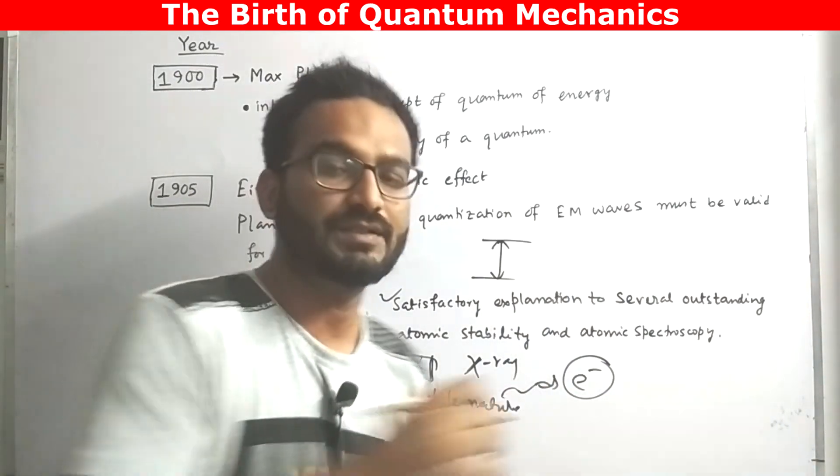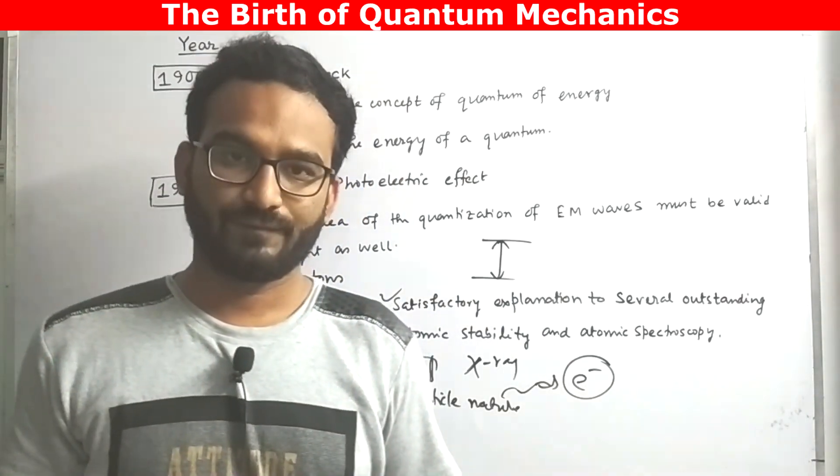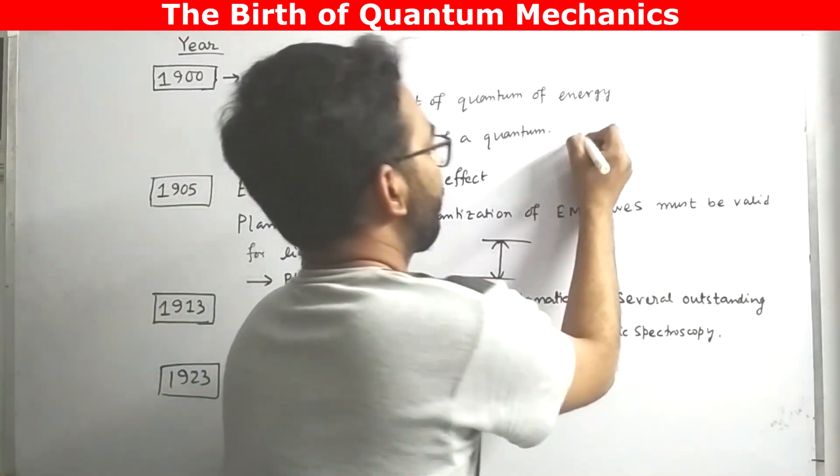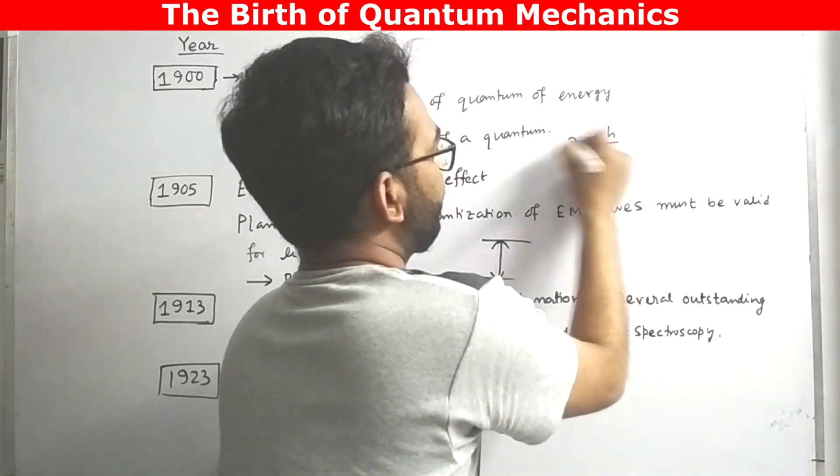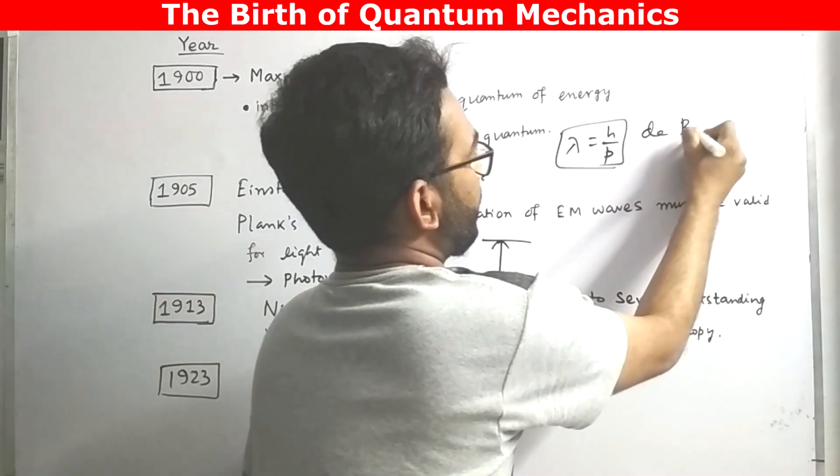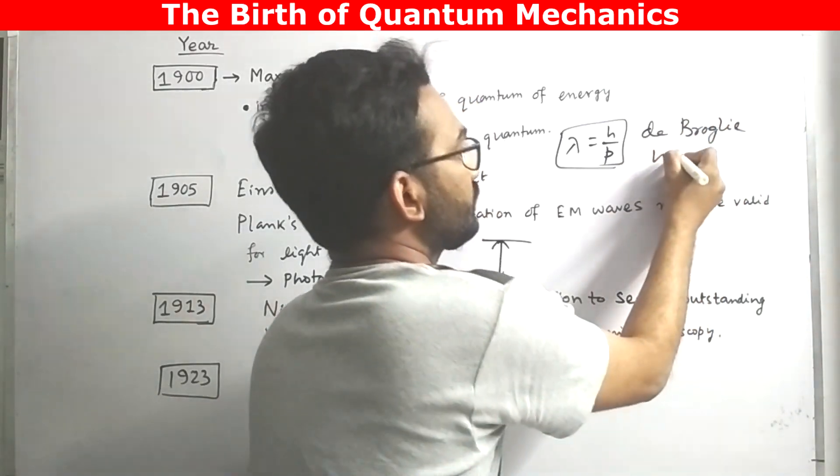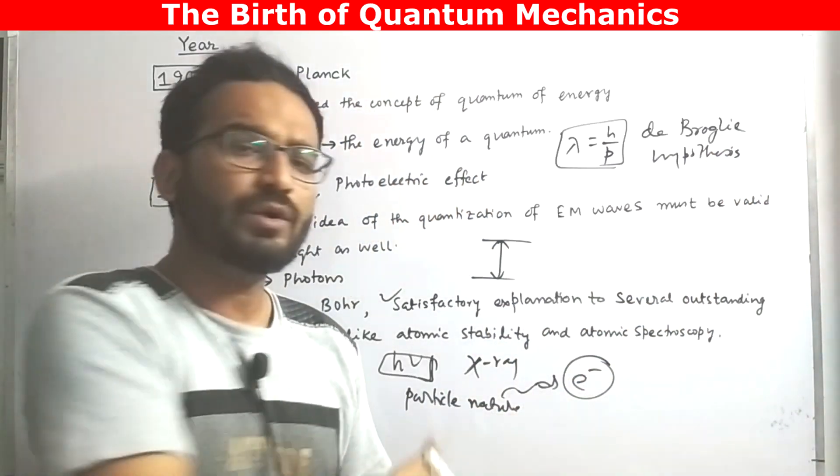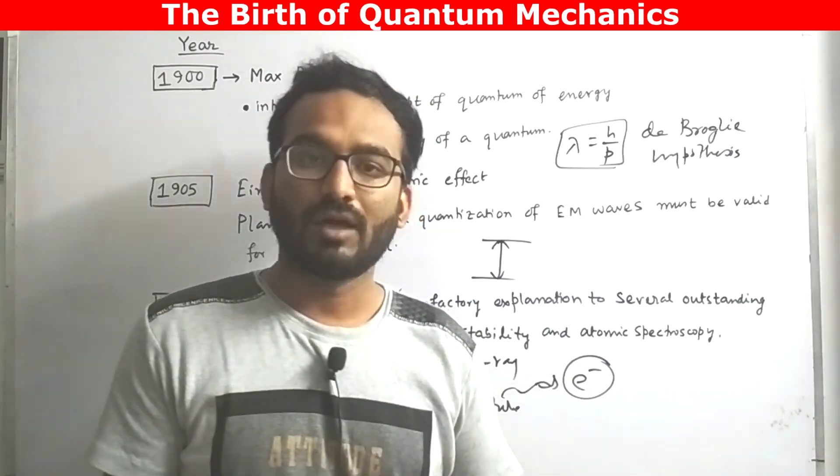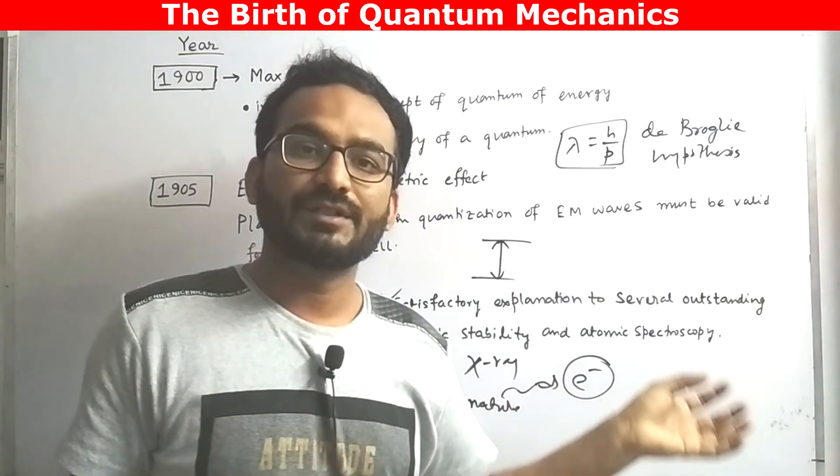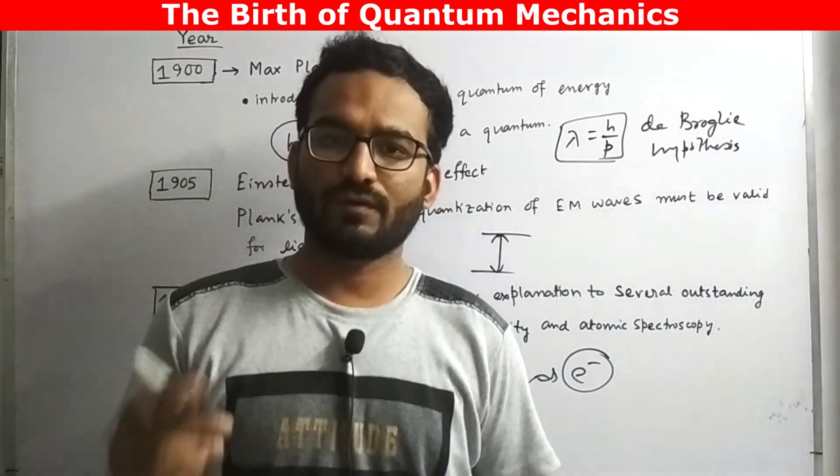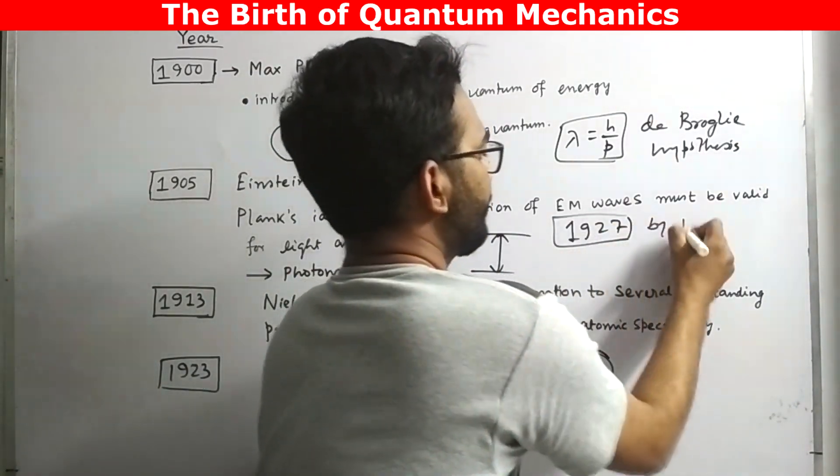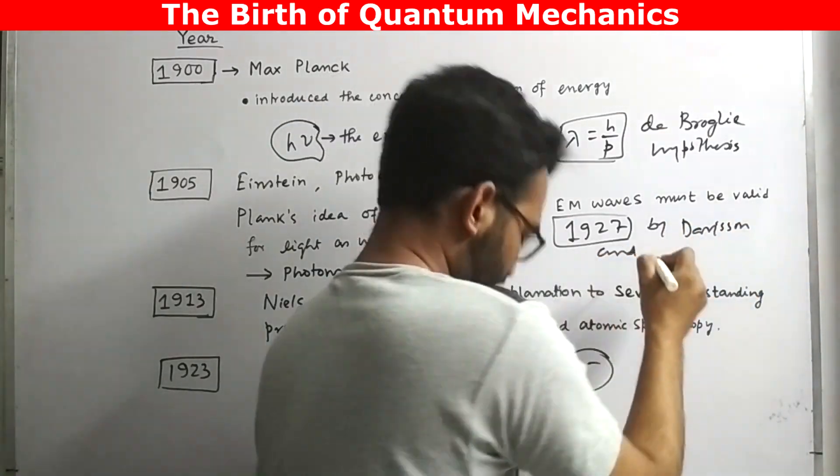In the same year, de Broglie postulated his very famous de Broglie hypothesis, lambda equals to h by p. According to this hypothesis, not only wave exhibits particle-like behavior but also particle also exhibits some wave-like behavior. And this concept was confirmed in the year 1927 by Davisson and Germer.